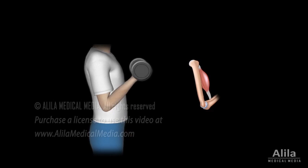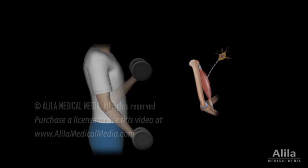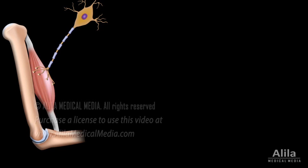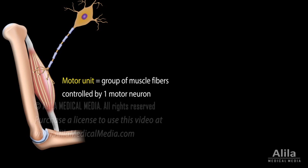A skeletal muscle contracts only when stimulated by nerve impulses from a motor neuron. Without innervation, muscles become paralyzed and eventually atrophied. The axon of a motor neuron usually gives out many branches, supplying multiple muscle fibers. These fibers contract in unison when activated, and constitute a motor unit. A motor unit can contain anywhere from just a few muscle fibers to thousands of them.